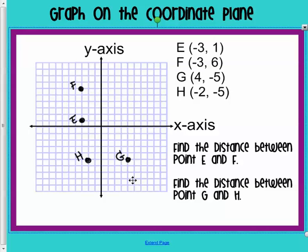So, here are my points again. Now, what they want us to do is find the distance between point E and F. Think back to absolute value. When we did absolute value, we found the distance between 0 and a number. In this case, we're finding the difference between these two points. So, if we're looking at E, it's 1, 2, 3, 4,